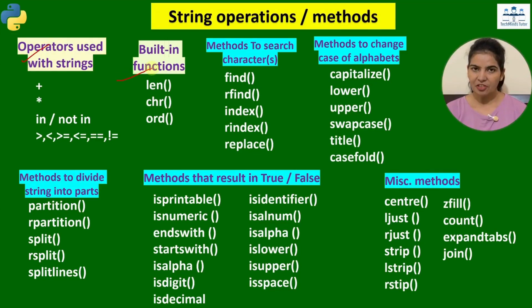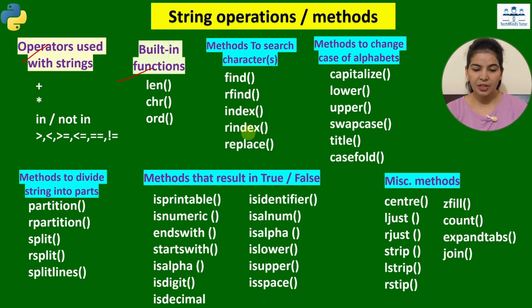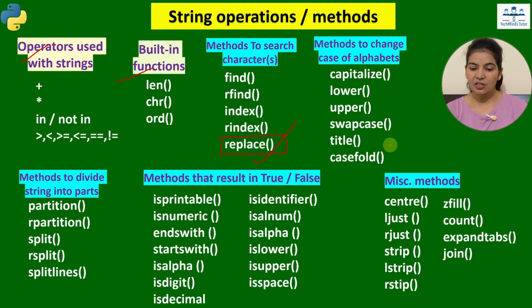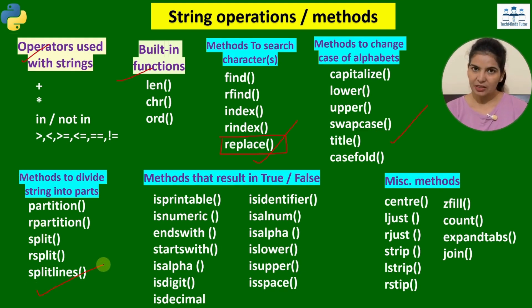In the previous video, we have seen operators and building functions. In this video, we will talk about string methods. When we have to search something in a string or a group of characters, we use these methods. We also have the replace method to replace text, methods to change the case of alphabets, and methods to divide a string into different parts. Now let's get started and see these methods one by one.